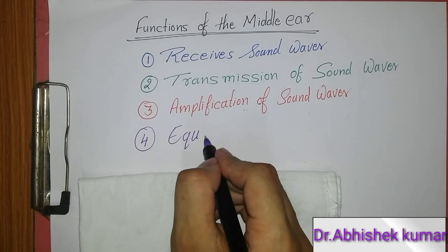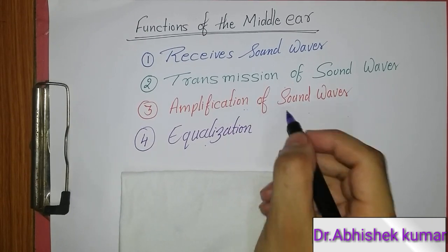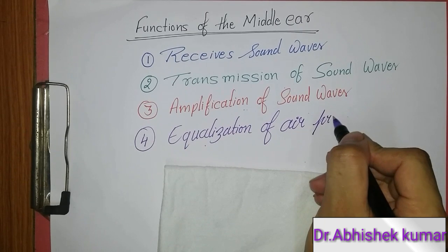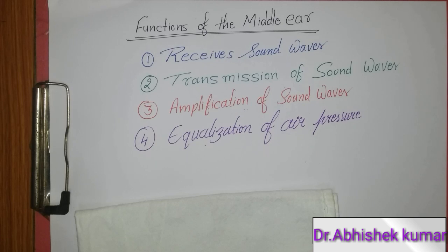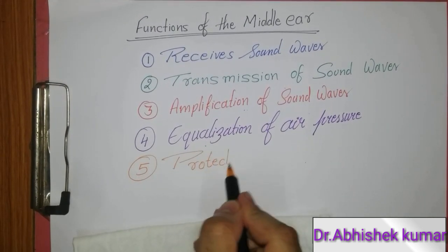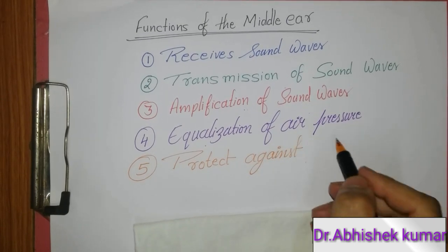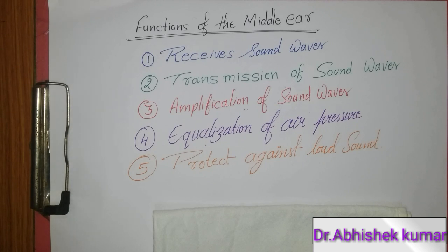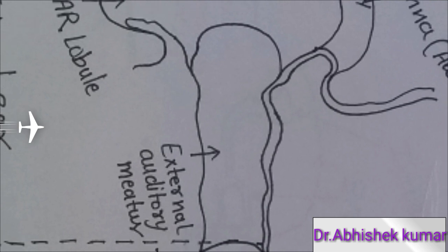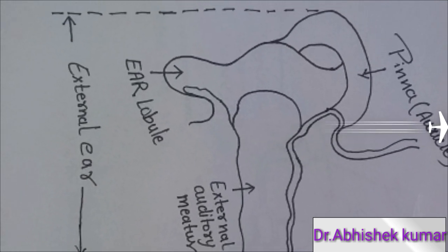The second reason for amplification is that the ossicular chain acts as a lever. The fourth function of the middle ear is equalization of air pressure. This is due to the Eustachian tube, which maintains the air pressure in the middle ear and is connected to the pharynx. In children, the Eustachian tube is shorter, which increases the chances of infection. The fifth function of the middle ear is to protect against loud sounds by activating the tympanic membrane.